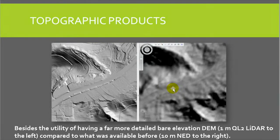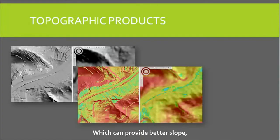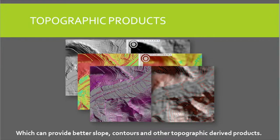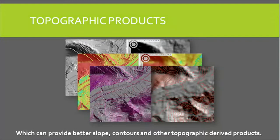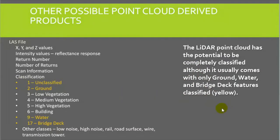The elevation data here provides a lot better capabilities, including better slope maps, aspect maps, contours — a whole realm of different kinds of data products now available to the user. But not only is there just the LIDAR data in the form of a digital elevation model, but you also have the point cloud data.